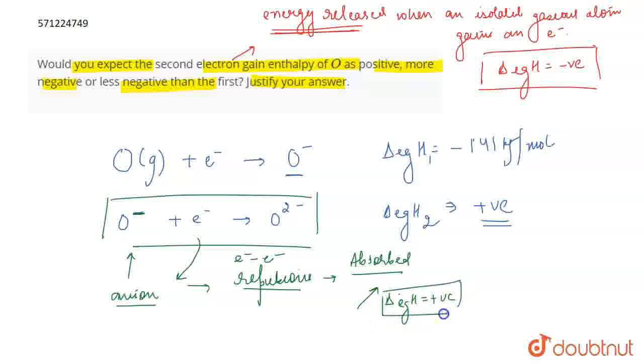To overcome these repulsions, some energy is absorbed. To overcome these repulsions, some energy has to be given, and only then an electron can be added.